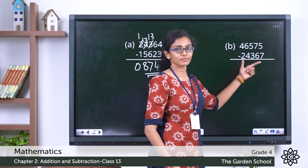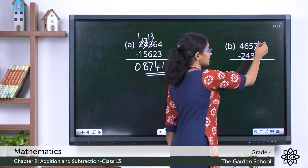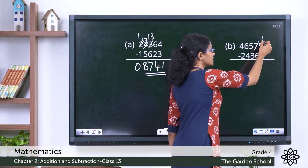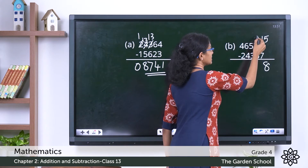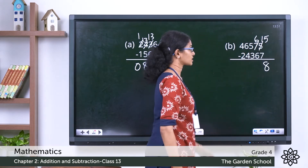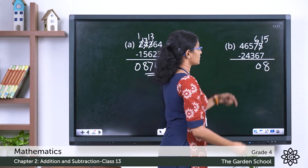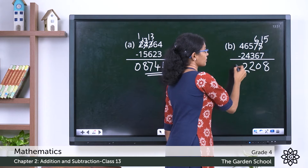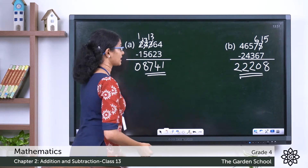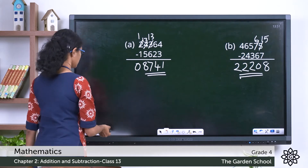Question B: you cannot do five minus seven, so borrow one ten from the tens place. Now it's fifteen minus seven is eight. The seven in the tens place is changed to six. Six minus six is zero. Five minus three is two. Six minus four is two. Four minus two is two. So the answer is 22,208.